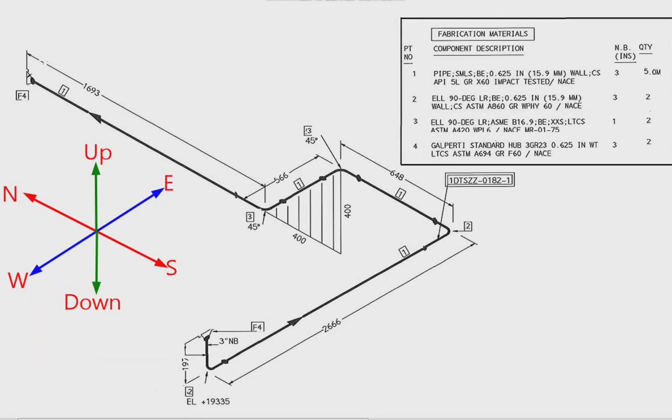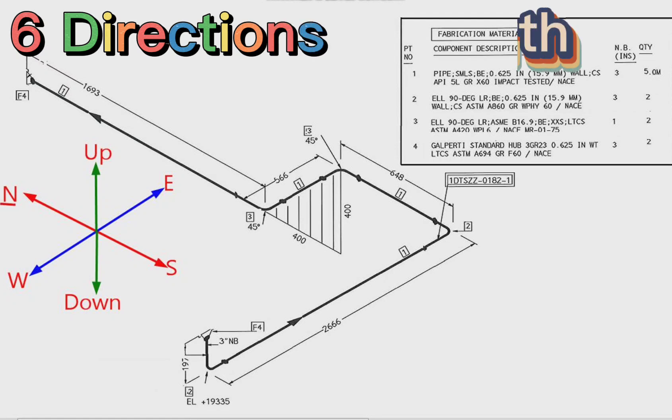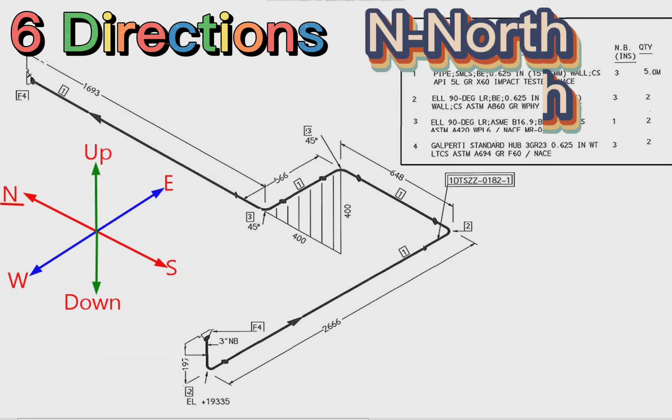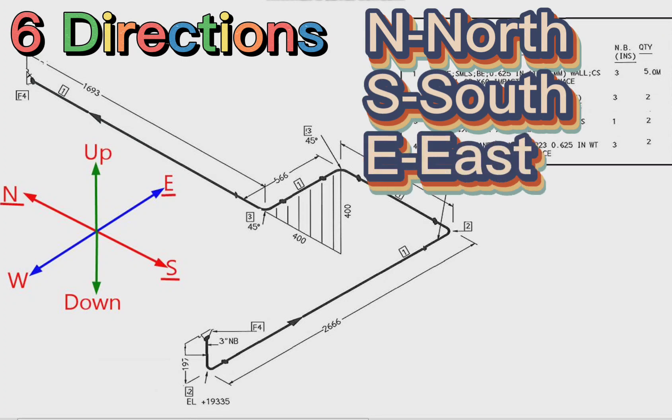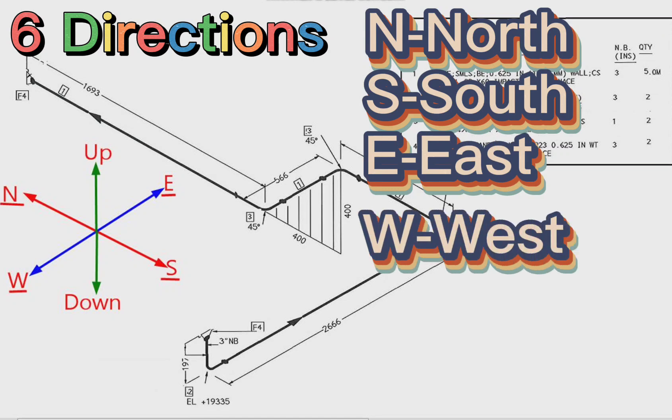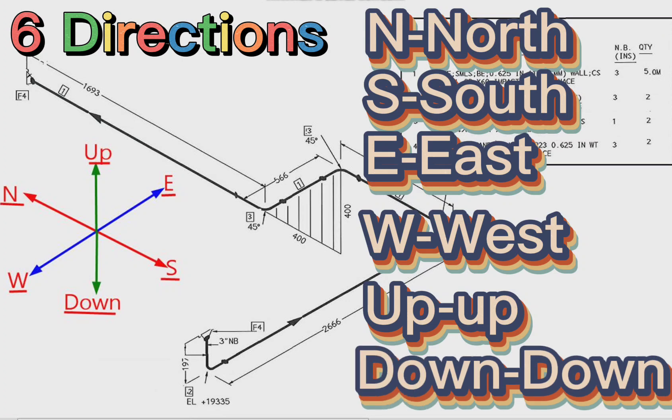There are 6 directions here. N stands for North. S stands for South. E stands for East. W stands for West. Up stands for Up. Down stands for Down Directions.